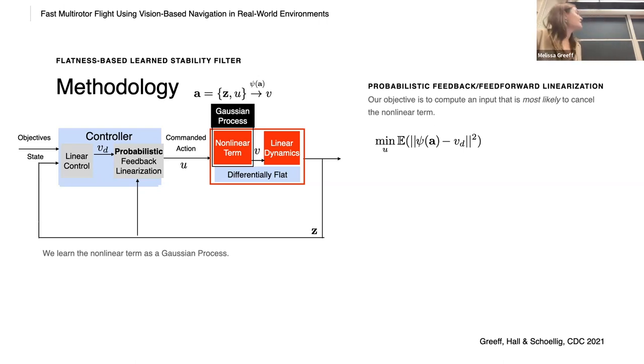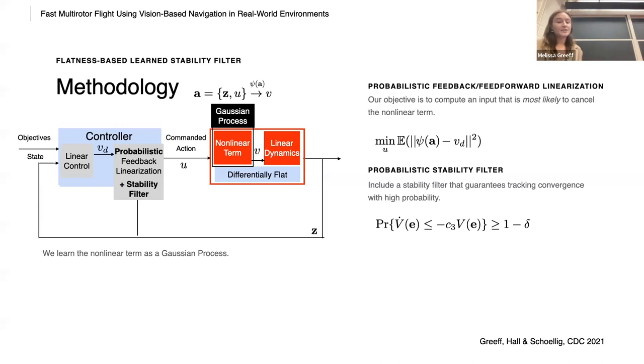So we use this Gaussian process model in a probabilistic feedforward linearization, where our objective is to compute the input that is most likely to cancel the nonlinear parameter. We also include a stability filter that uses the uncertainty from the Gaussian process to guarantee tracking convergence with high probability. And we can include input constraints.